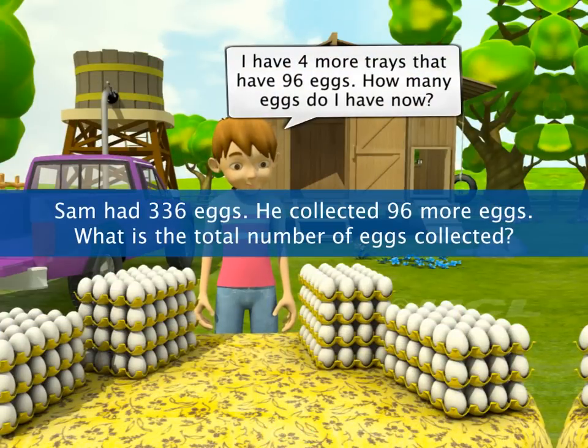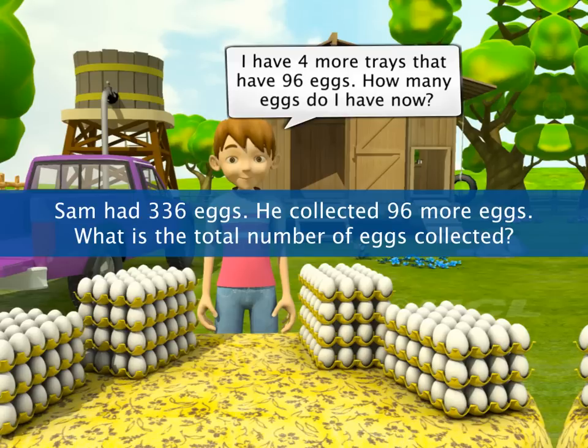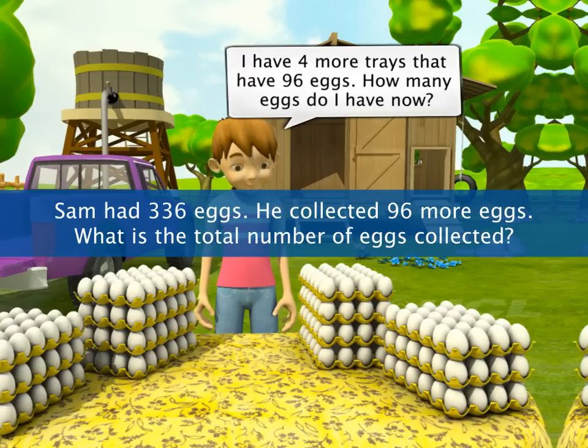Sam had 336 eggs. He collected 96 more eggs. What is the total number of eggs collected? What do you think you need to do to find the answer? This calls for addition.